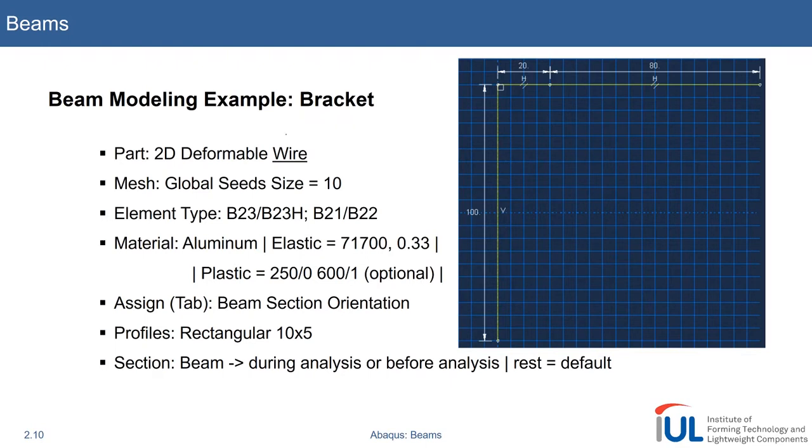This is exactly the trick where you can access the world of beams if you go for wire. Even in 3D it's the same, it's called wire. This bracket here depicted on the right has a height of 100 and a width of 102.